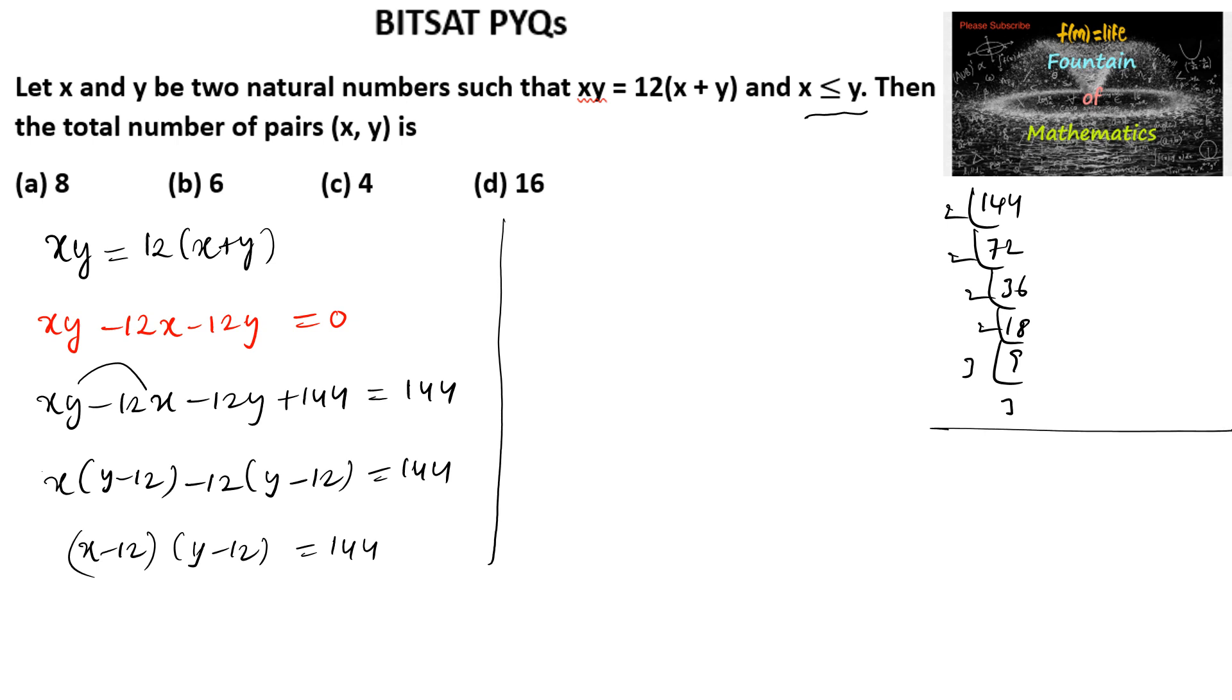Using these factors for (x minus 12) times (y minus 12) equals 144, we can write: 1 times 144, 2 times 72, 3 times 48, 4 times 36, 6 times 24, 8 times 18.